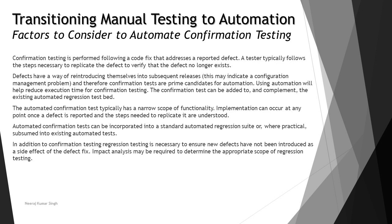The automated confirmation test typically has a narrow scope of functionality. Implementation can occur at any point once a defect is reported and the steps needed to replicate it are understood. Automated confirmation tests can be incorporated into the standard automated regression suite itself — using a keyword-driven framework, you can call the respective test you want to run at that point of time to rerun a particular set of instructions.